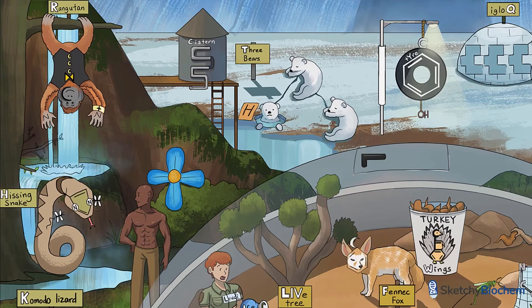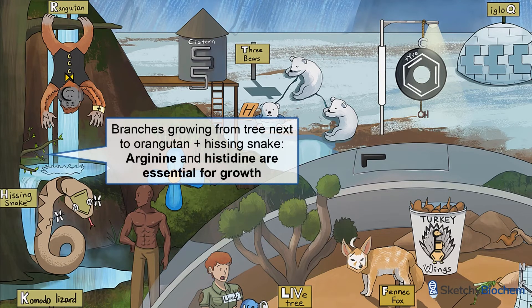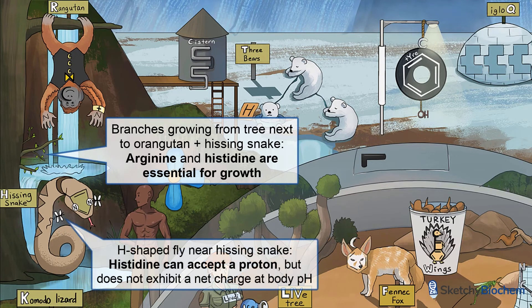Arginine is essential for cellular growth because it specifically stimulates the release of insulin-like growth factor, or IGF-1. But what about hissy-face histidine? Histidine's side-chain pKa is a lot lower than lysine's and arginine's, so it's neutral at body pH. However, histidine can accept a proton, which is why it's considered a basic amino acid. That H-shaped fly can land any time, but it probably won't. Just like arginine, histidine is needed for cellular growth, especially in children, during pregnancy, and in anyone who's recuperating from trauma.